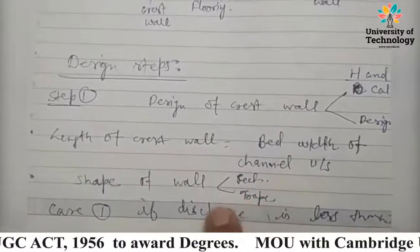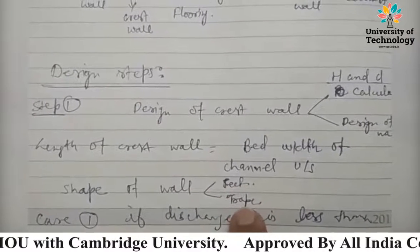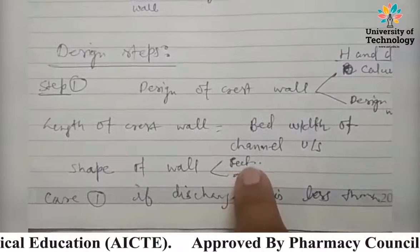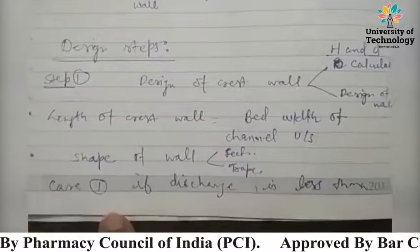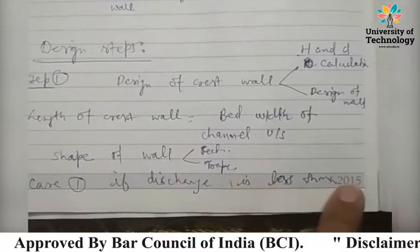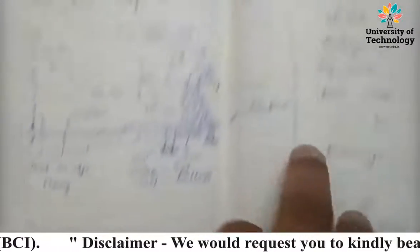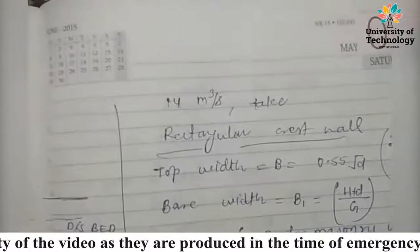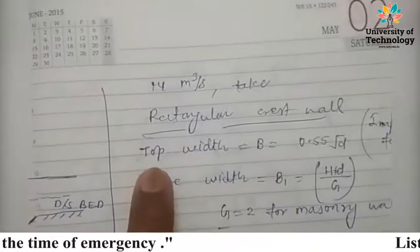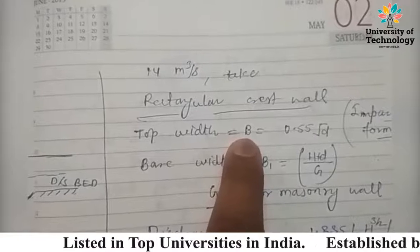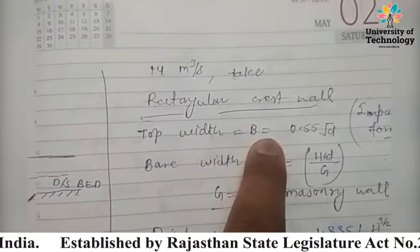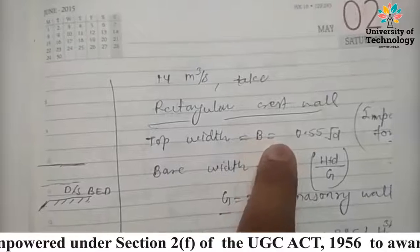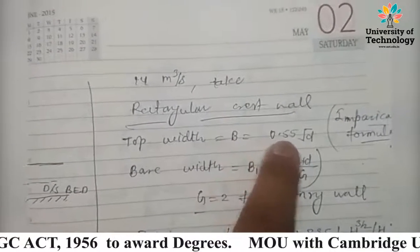There are two types of shapes: rectangular and trapezoidal. Case one: if discharge is less than 14 cubic meters per second, then take a rectangular crest wall. The top width is calculated as capital B, given by the empirical formula: B = 0.55 × √(small d).